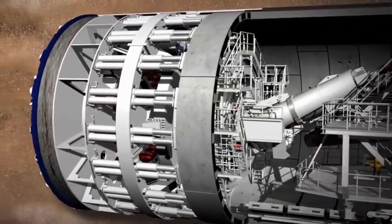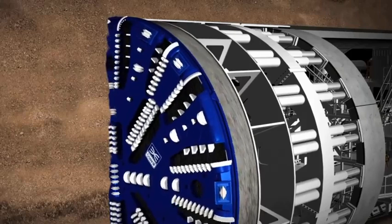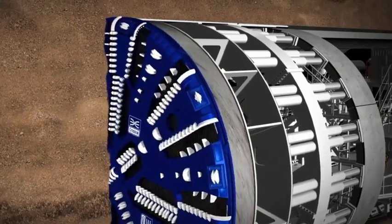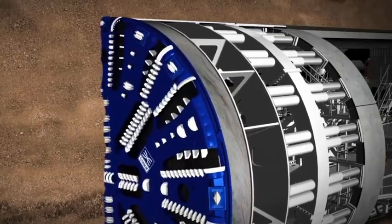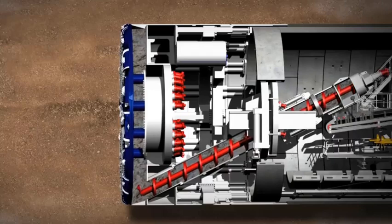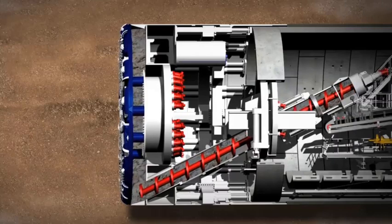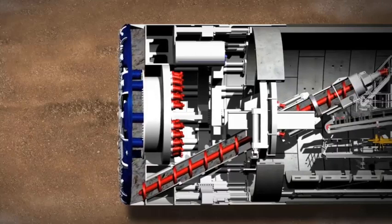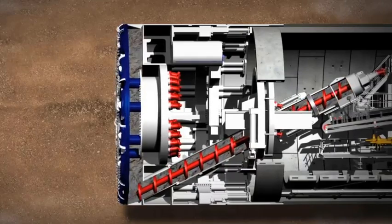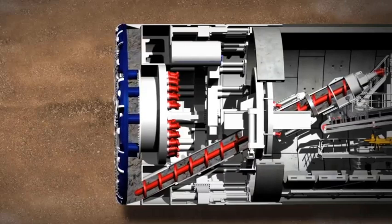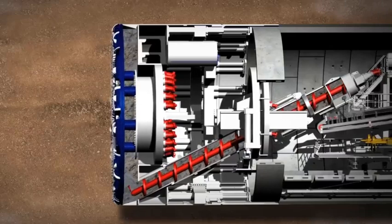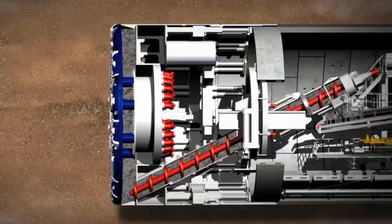The first part of the TBM's work is the tunneling phase. The earth-pressure-balanced TBM has a cutting wheel which is pressed against the tunnel face by hydraulic cylinders. Inside the cutting wheel, the disc cutters and scraping tools loosen the material. If the earth is unstable and to stop the tunnel face collapsing or digging too fast, the TBM uses the soil that has already been dug out by the cutting wheel to support the tunnel face. This creates a stable environment for the tunneling to move forward.